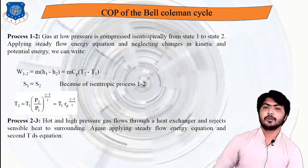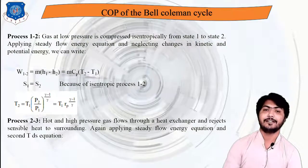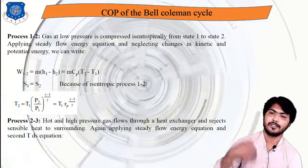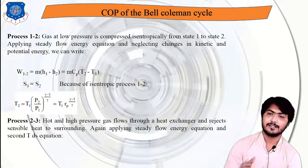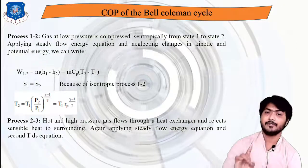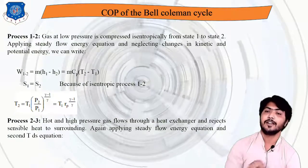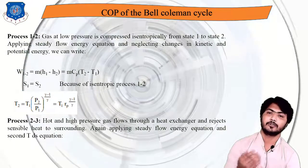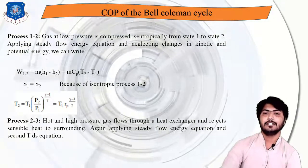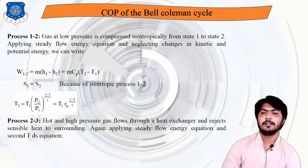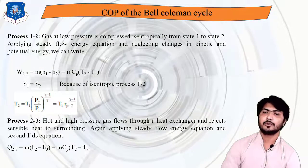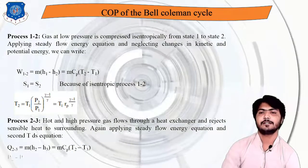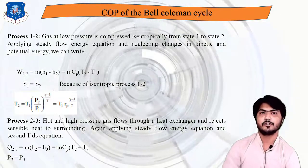In process 2 to 3, hot high-pressure gas flows through the heat exchanger where it rejects sensible heat to the surroundings — sensible because no phase change occurs in air refrigeration. Applying SFEE to the heat exchanger: Q23 = m(H2 − H3) = mCp(T2 − T3), and pressure is constant so P2 = P3.